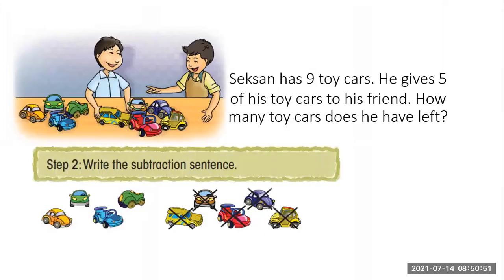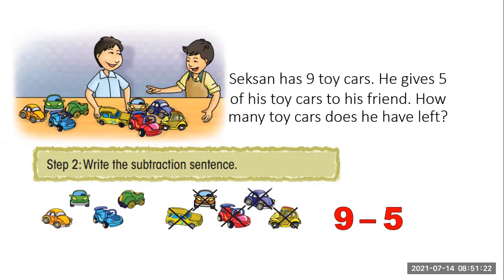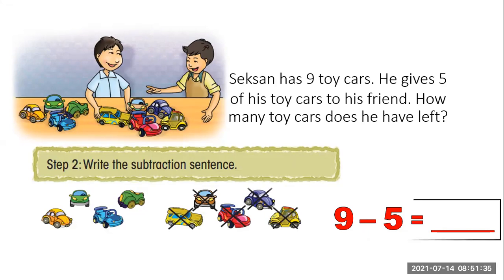Step number two: write the subtraction sentence. Gixon has nine toy cars, so we write nine. He gives five of his toy cars to his friend — the word 'gives' indicates minus — so we write minus five. The question equals how many toy cars does he have left. This is called the subtraction sentence.